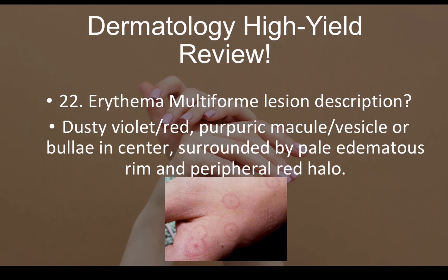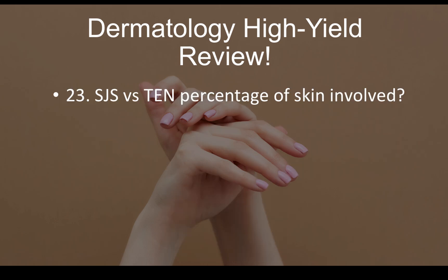Question number twenty-two: erythema multiforme lesion description — dusty violet-red purpuric macules and vesicles with a bulla in the center, surrounded by a pale edematous rim and a peripheral red halo. You can see the red halo all around with the marked center.